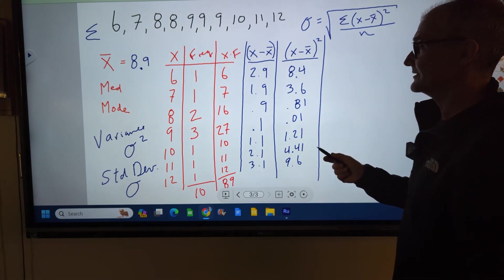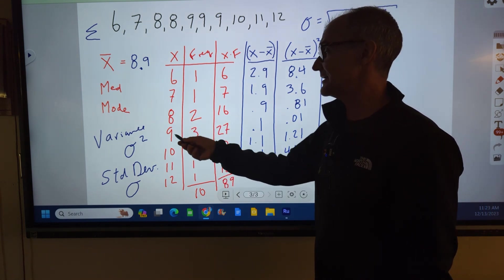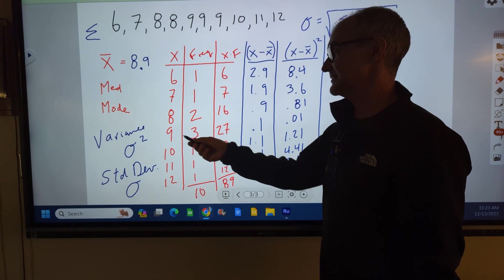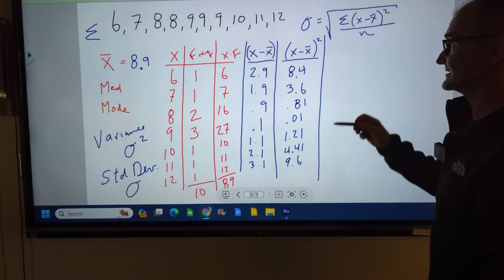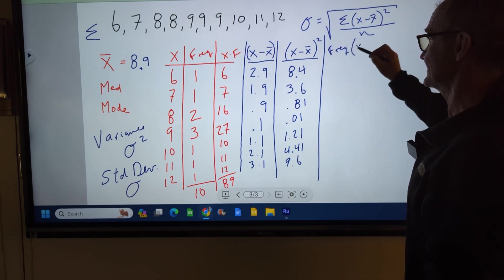Okay, so now I have all my deviations squared here. But remember, I have 2 values of this, so I've got to take that into account. I've got 3 values of this, so I have to take those into account. So I'm actually going to do a new column: frequency times my deviation squared.